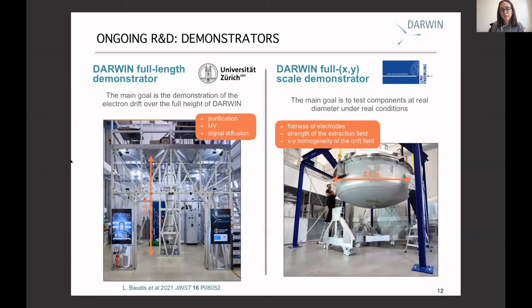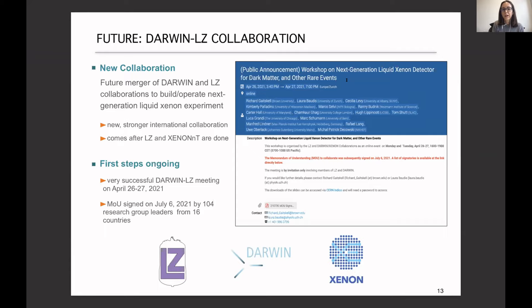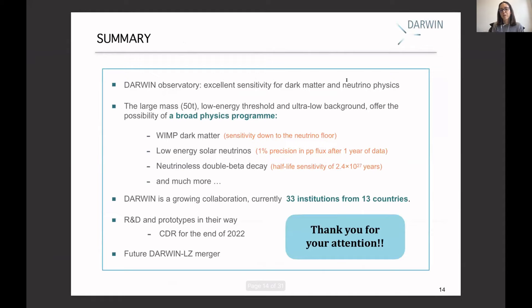At the University of Freiburg in Germany, we have a DARWIN full x-y scale demonstrator — a TPC with 2.6 meter diameter but small height — to study electron extraction field and charge collection. Finally, I would like to mention that in the future the DARWIN and nEXO collaborations plan to merge to build and operate the next-generation liquid xenon experiment. There have been successful meetings in April and an MOU signed in July. In conclusion: DARWIN will be an excellent TPC to look for WIMPs, but also for other physics channels including neutrinos. Thank you very much.